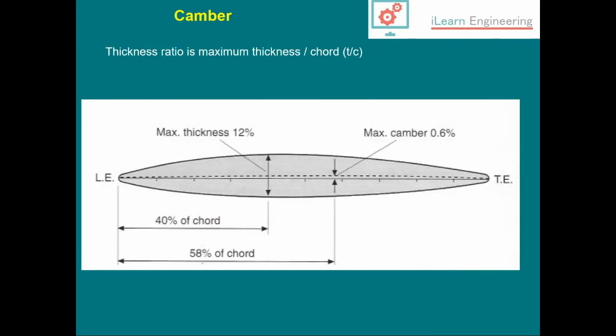A bit more detail on camber: in this example, the position of maximum thickness is at 12% of the chord, and the maximum camber is 0.6%, not a lot of camber, happening at 40% of the chord. The maximum camber occurs at 58% of the chord. These distances are quoted as being downstream of the leading edge.